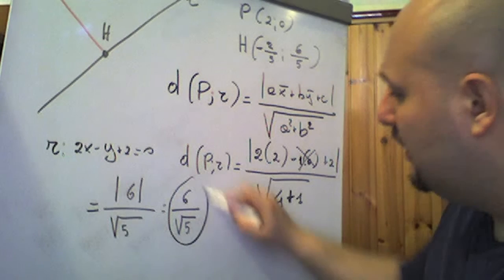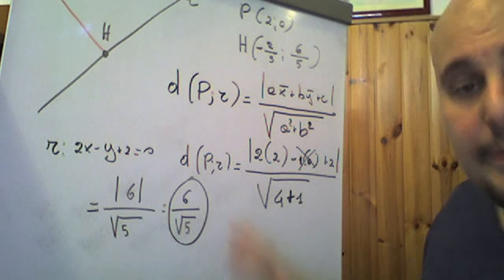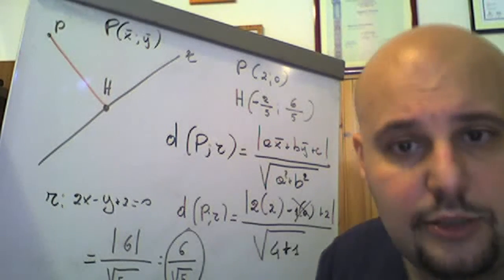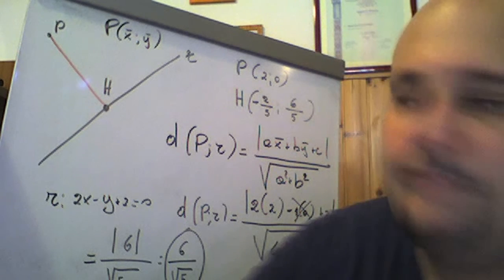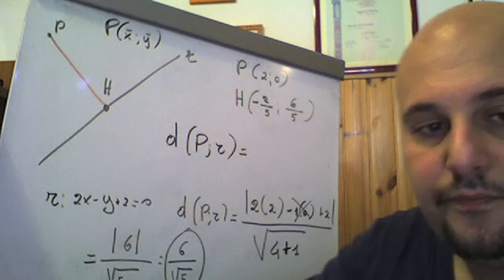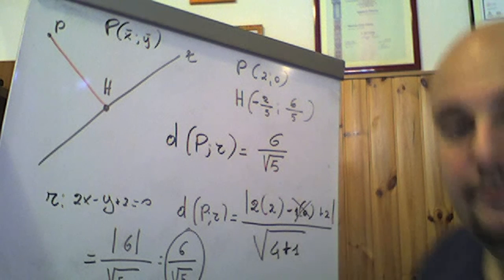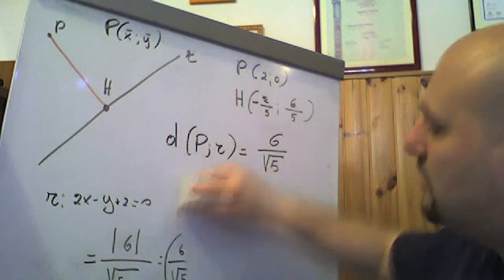Non ci interessa tanto il risultato numerico, quanto far vedere un concetto fondamentale. Abbiamo calcolato facilmente la distanza di un punto da una retta. Dimostriamo come questa distanza è uguale alla distanza del punto P da H, cioè dalla proiezione ortogonale di P sulla retta R. Scriviamo: 6/√5 — vi faccio vedere che 6/√5 è anche la distanza fra i punti P e H.